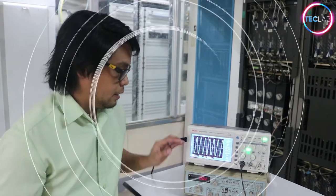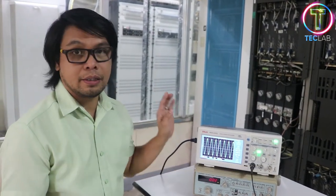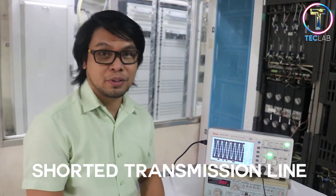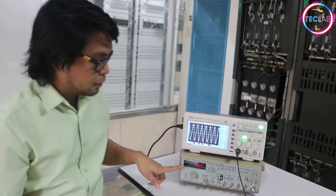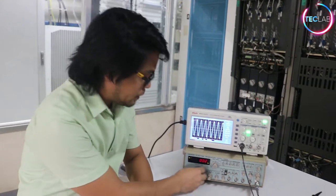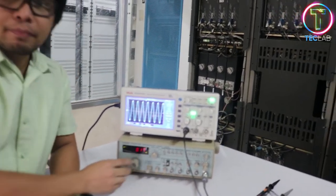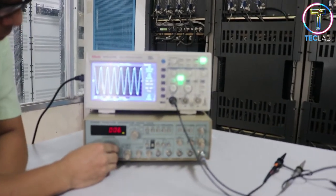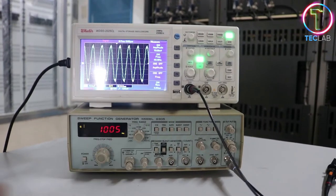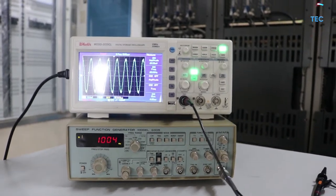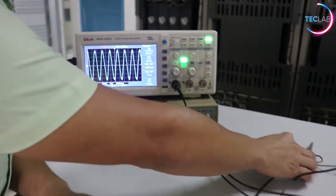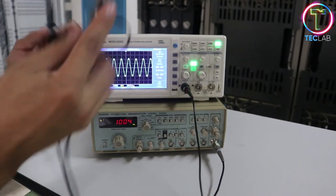So we're going to set up the signal generator and the oscilloscope for our laboratory now. So first, we're going to set this up to at least a 1 kilohertz frequency. Next, let's see. So now we're going to check this on our scope.